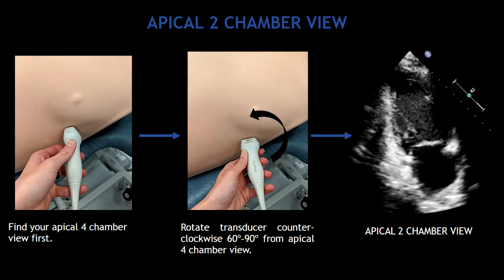Now the apical two-chamber view. To obtain this view, you have to find your apical four-chamber view first. From your apical four-chamber view, you have to rotate the probe counterclockwise between 60 and 90 degrees. The index marker is going to be pointing somewhere between the median axillary line and the clavicle.